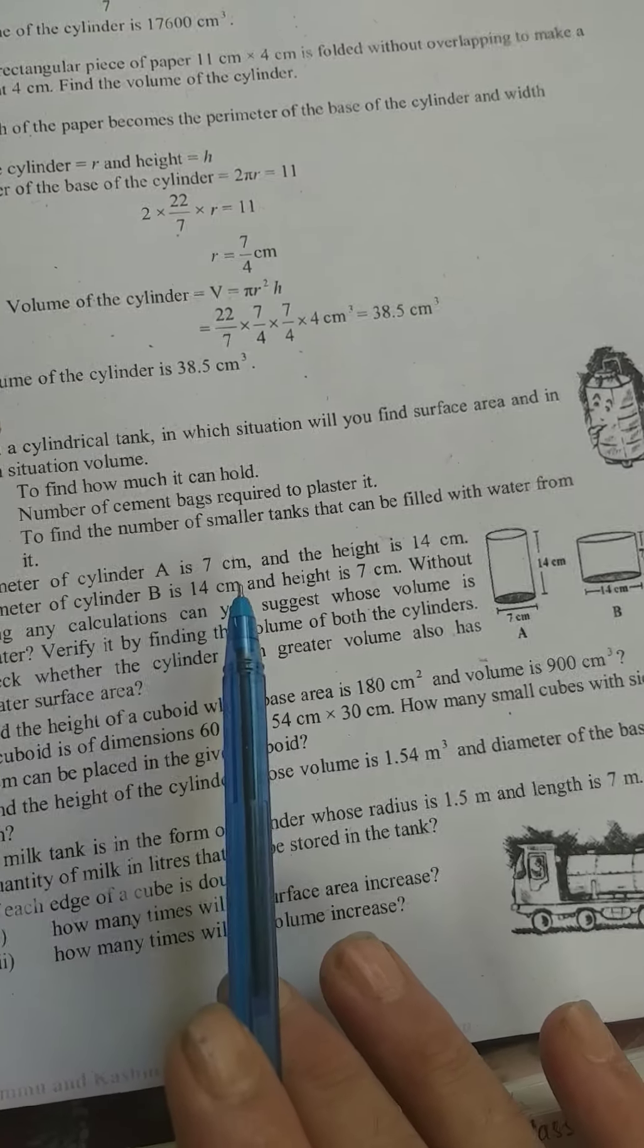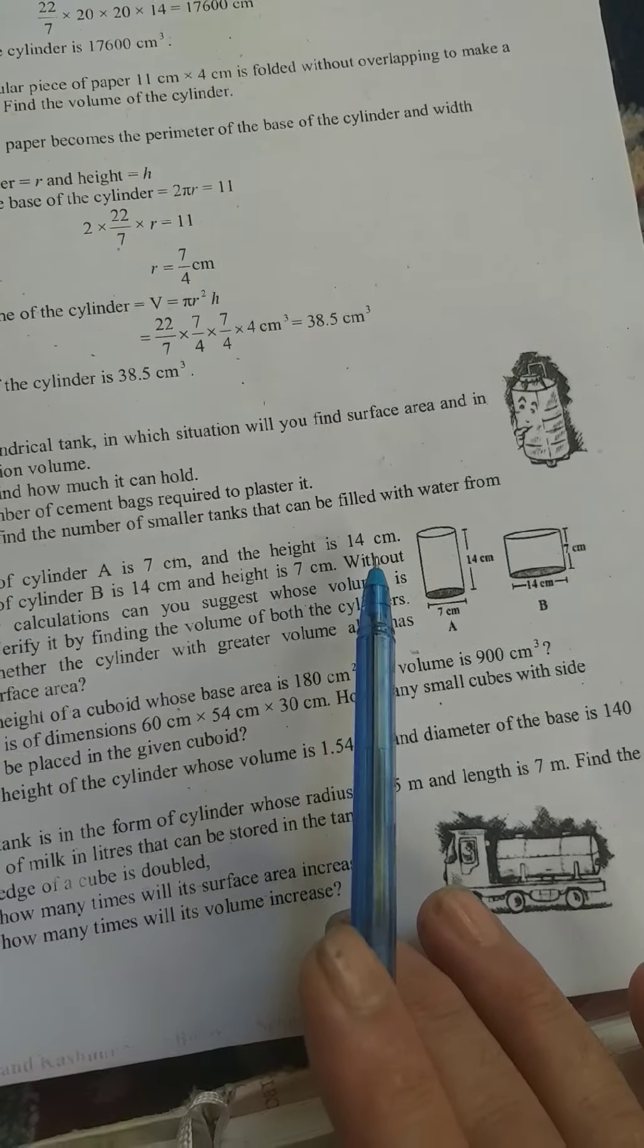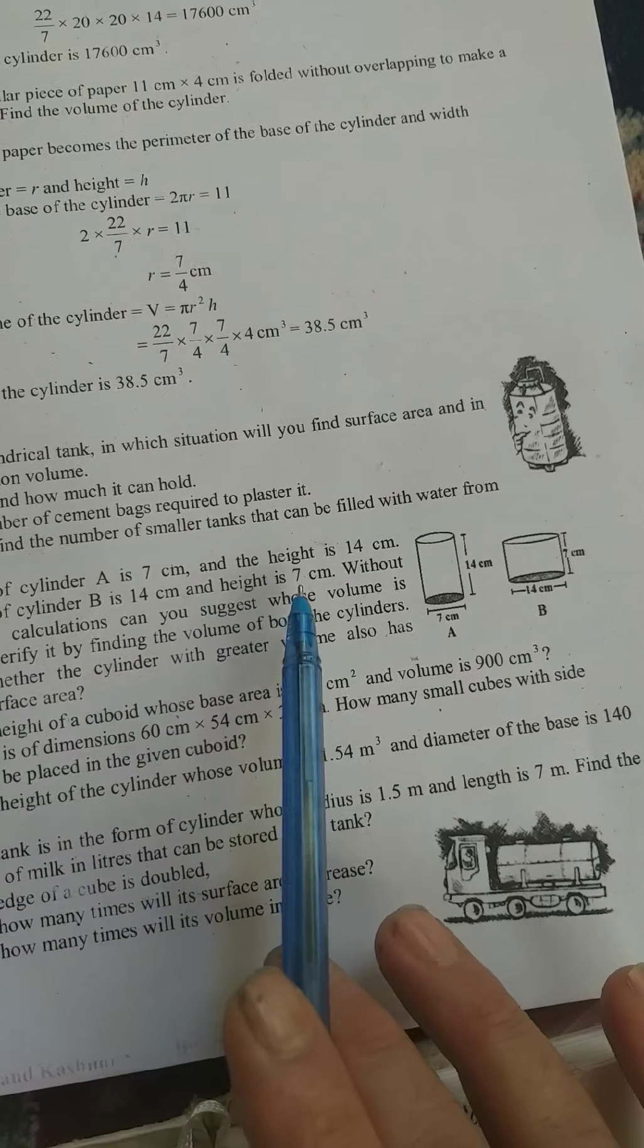Diameter of cylinder A is 7cm and height is 14cm. Diameter of cylinder B is 14cm and height is 7cm.